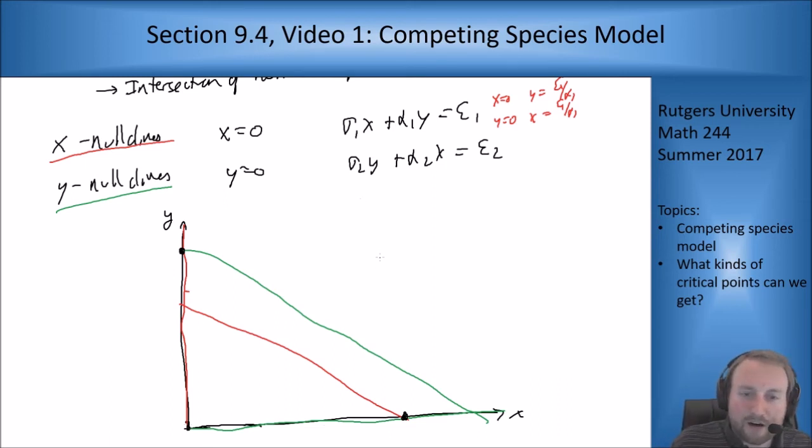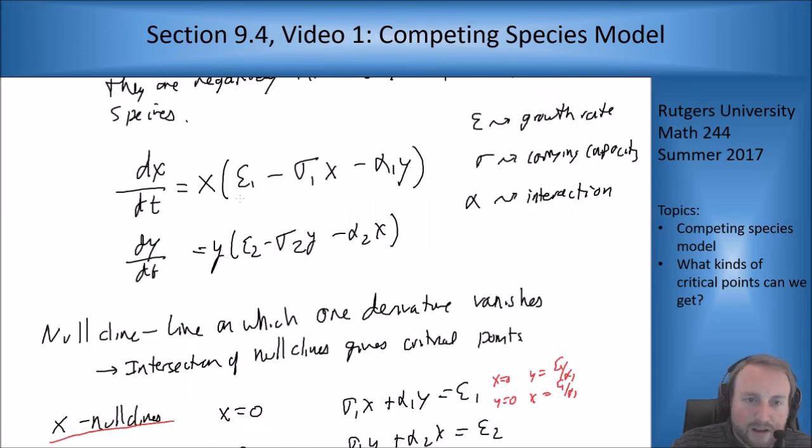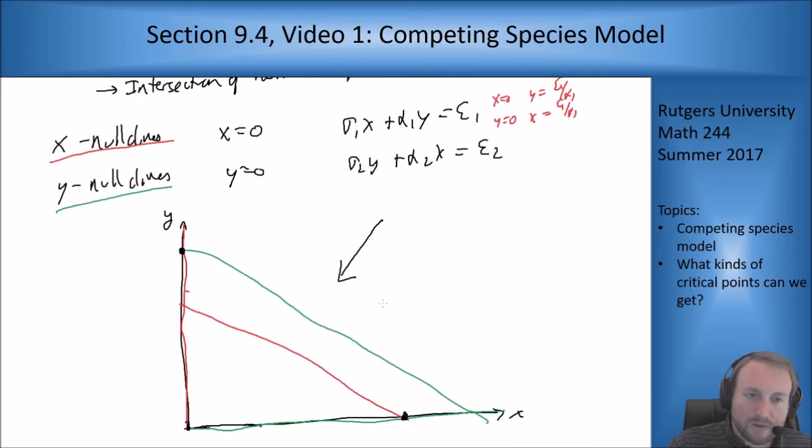Now what the nullclines tell me is they tell me where certain derivatives switch sign. So I know if I'm up top here both dx and dy are negative. Why? If I look at the equations, then if x and y are really big then both derivatives are negative because this term here is going to make the whole thing negative for x and y really large.